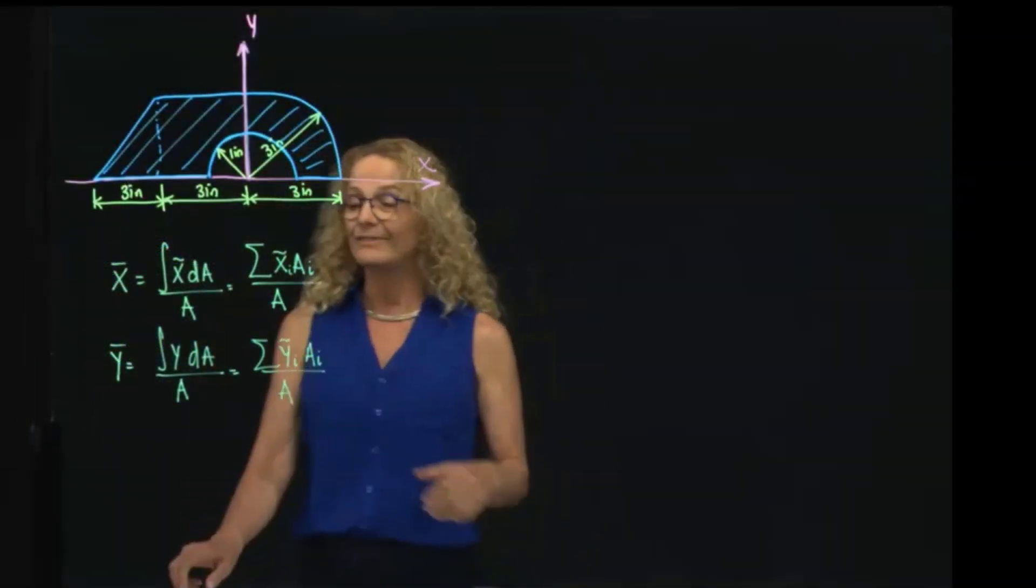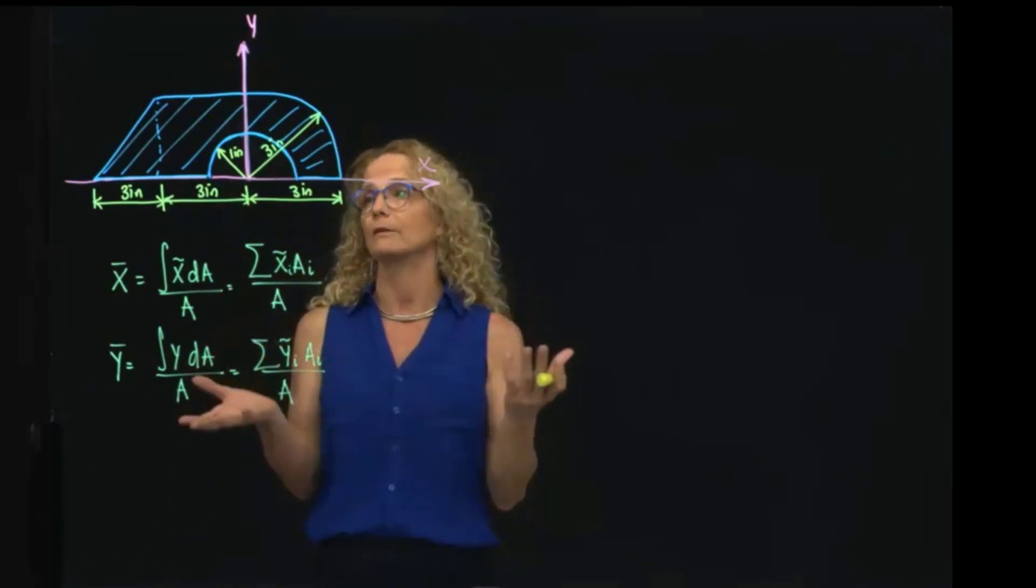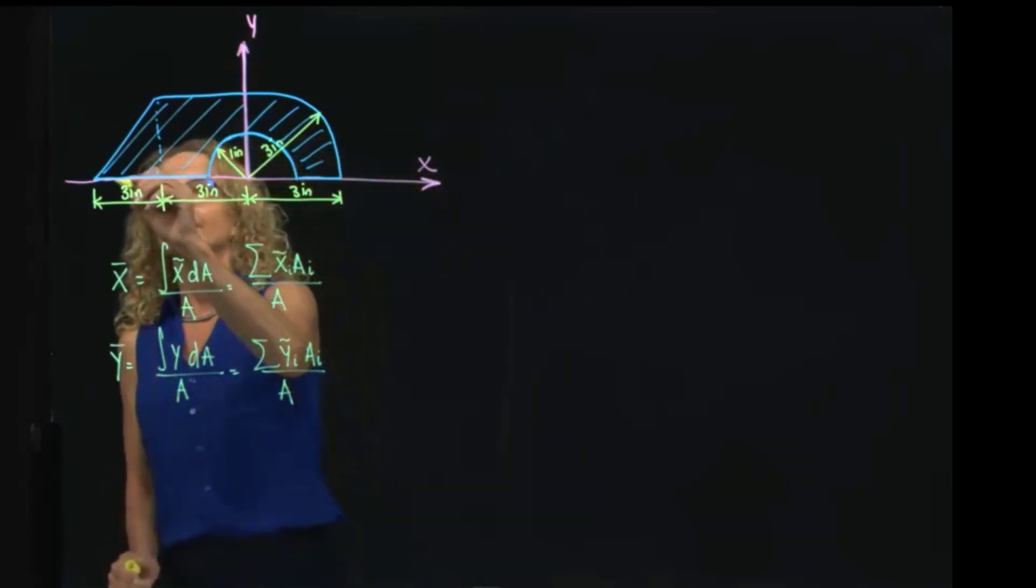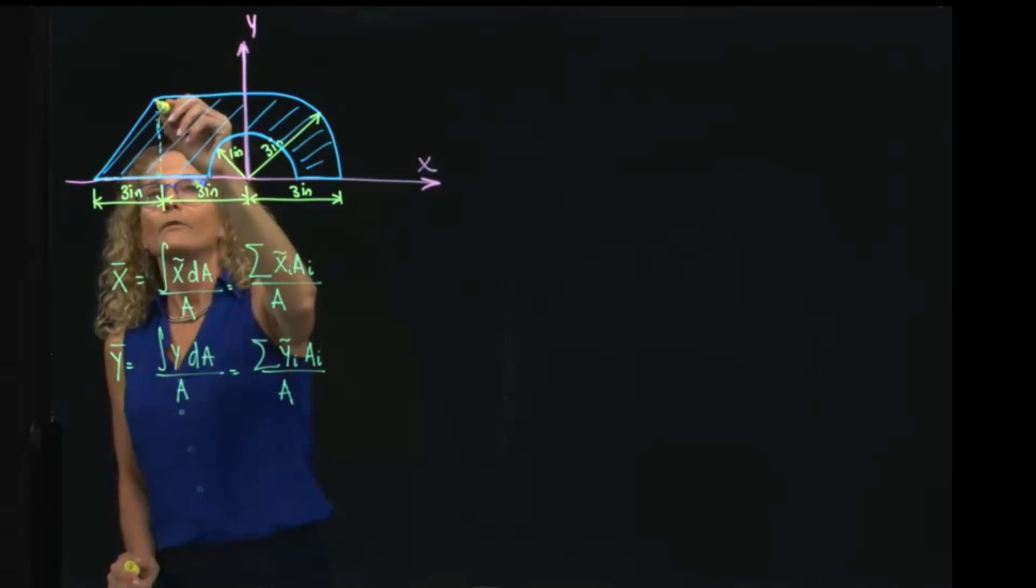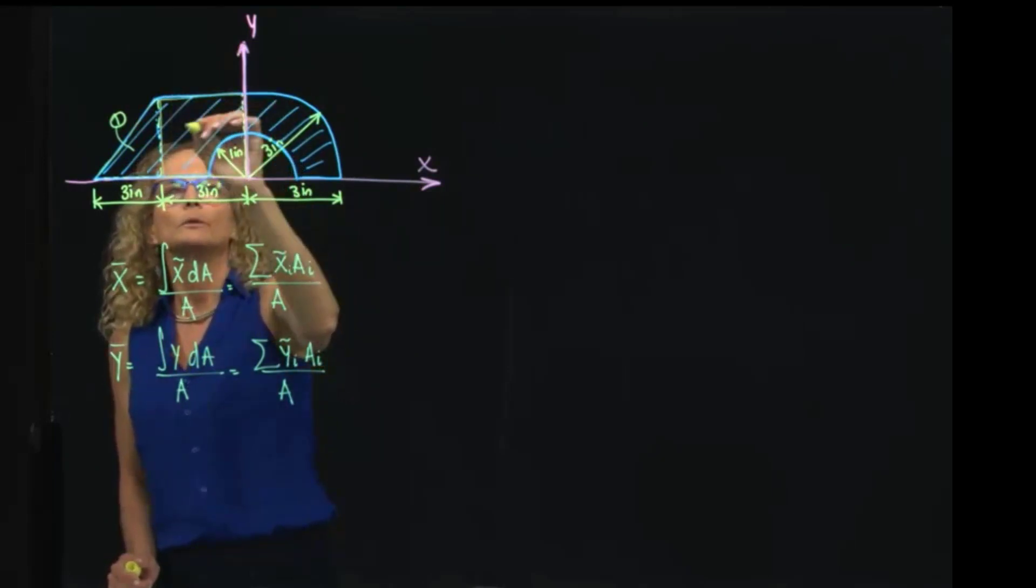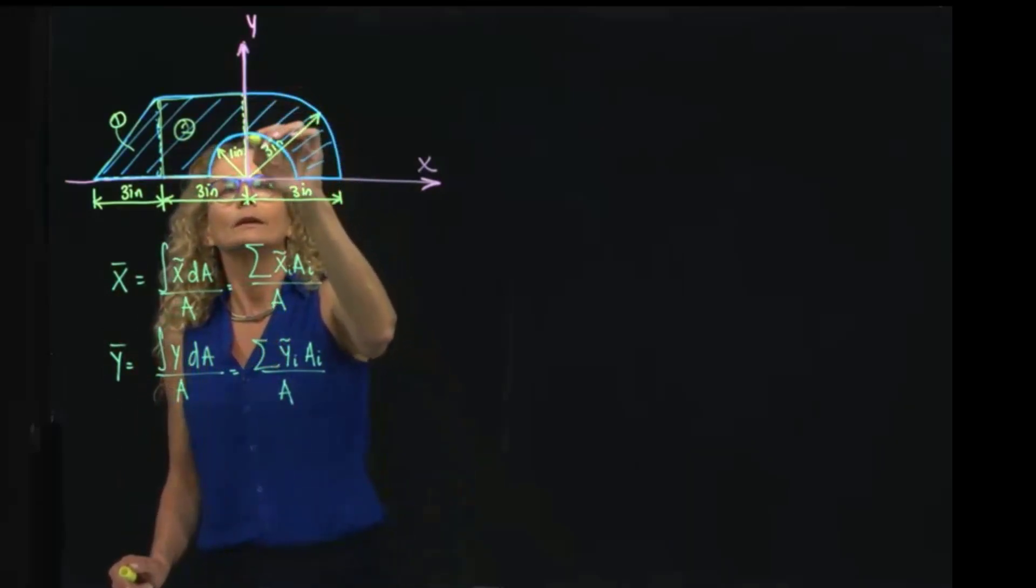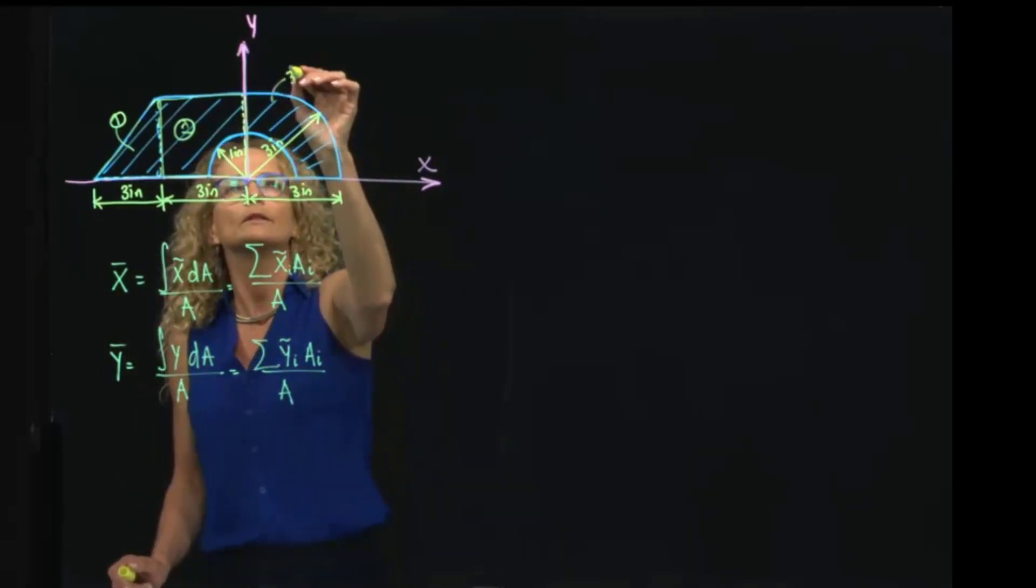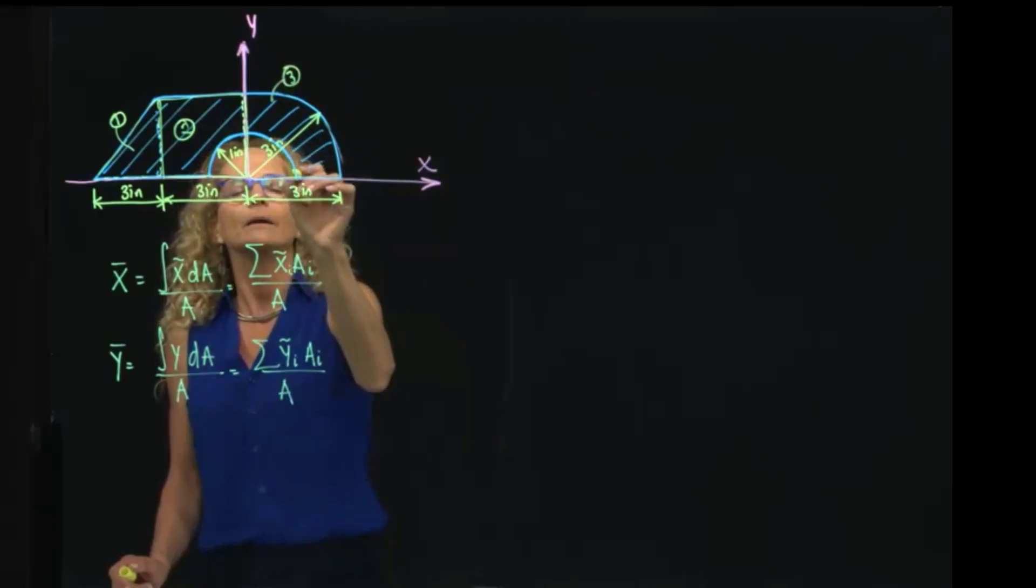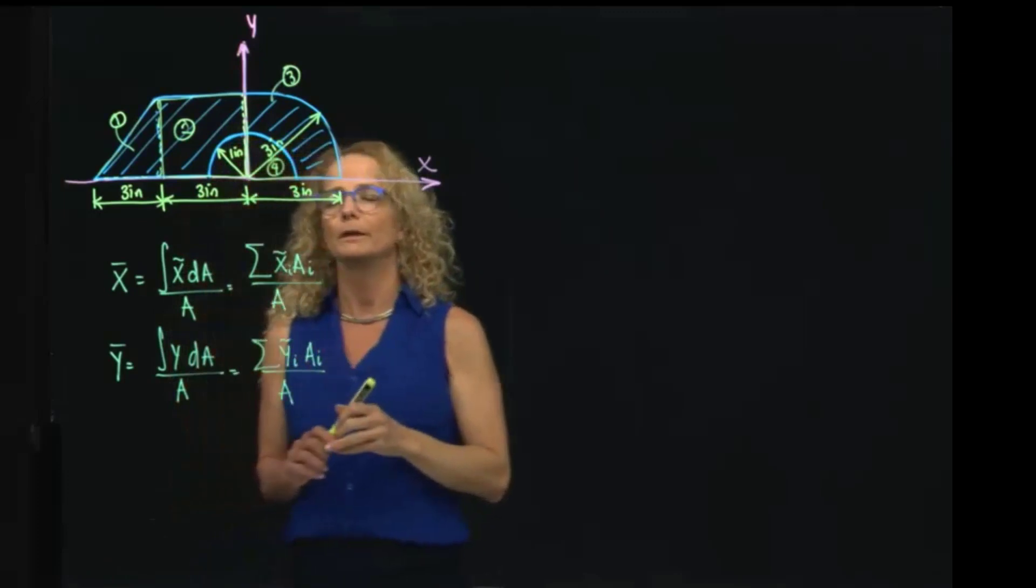So we have to divide our figure in as many shapes that we know the centroid. So I can divide this into one figure over here. This is 1. This will be my second figure, which is a square, which will be equals to 2. Then I have this over here is a circular plate, right? That will be over 3. And my another circular plate, but empty, will be 4.